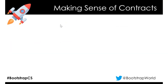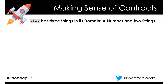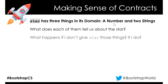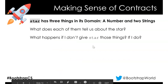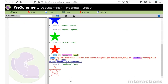Let's review what we know about contracts. Based on star: it has three things in its domain - a number and two strings. What does each tell us about the star? The first one appears to be the size of the star, the second is what the error message called a 'style,' and the third is clearly a color.